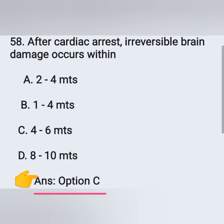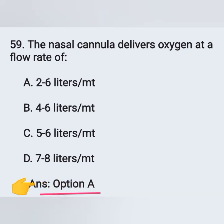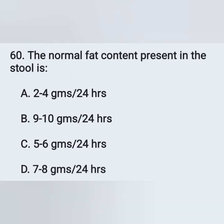Question 59: The nasal cannula delivers oxygen at a flow rate of: Option A: Two to six liters per minute, Option B: Four to six liters per minute, Option C: Five to six liters per minute, Option D: Seven to eight liters per minute. The nasal cannula delivers oxygen at two to six liters per minute — Option A is the correct answer.